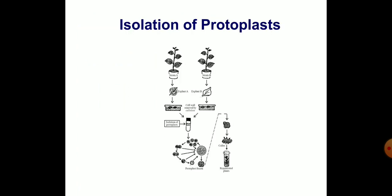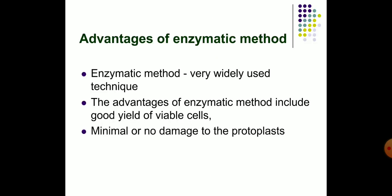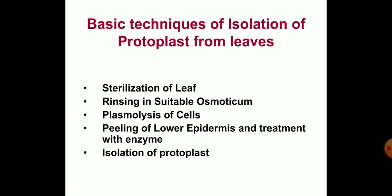The advantages of the enzymatic method include good yield of viable cells and minimal or no damage to the protoplasts. Leaves are most commonly used for protoplast isolation since it is possible to isolate uniform cells in large numbers.